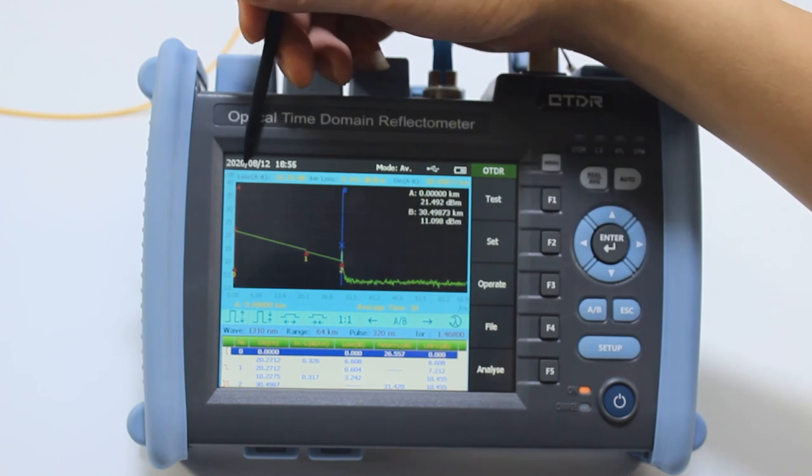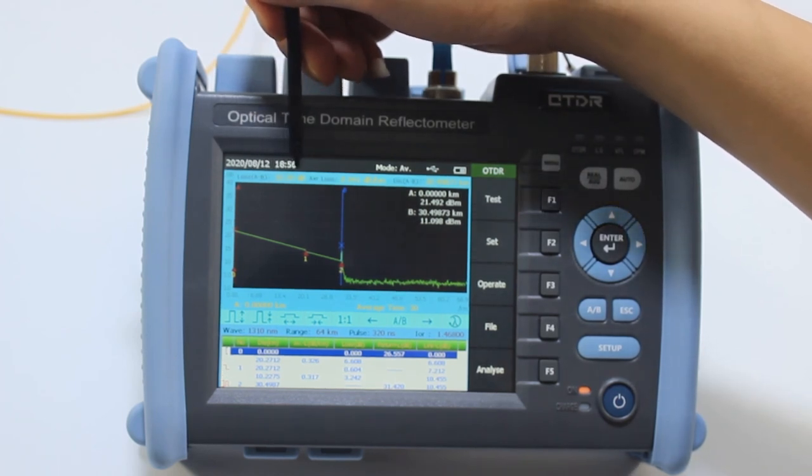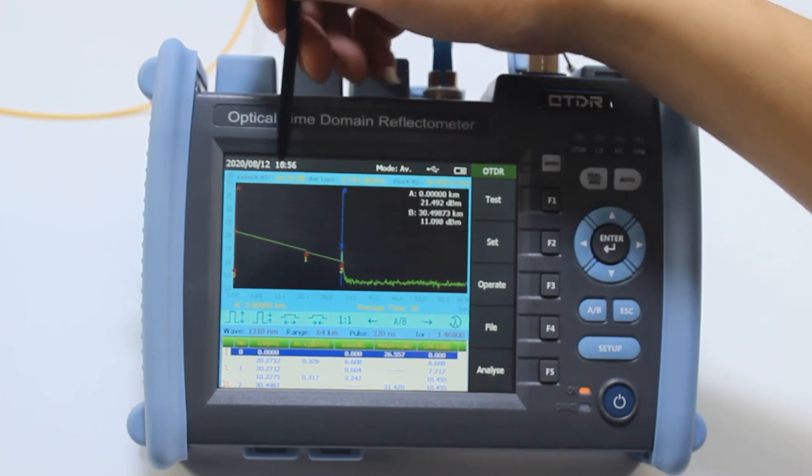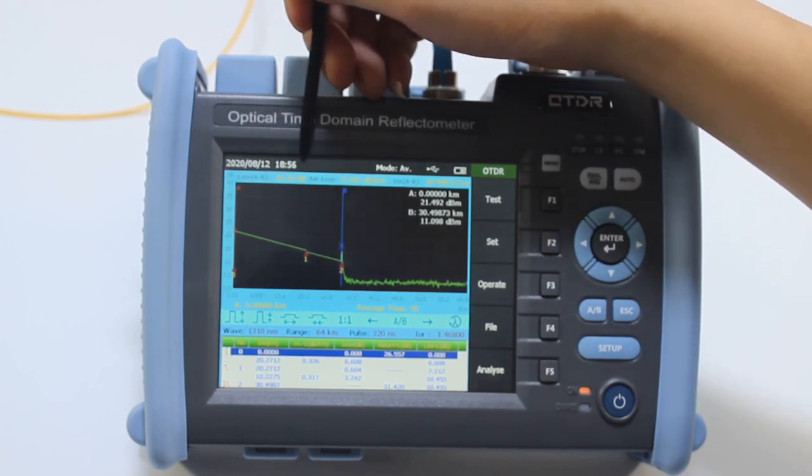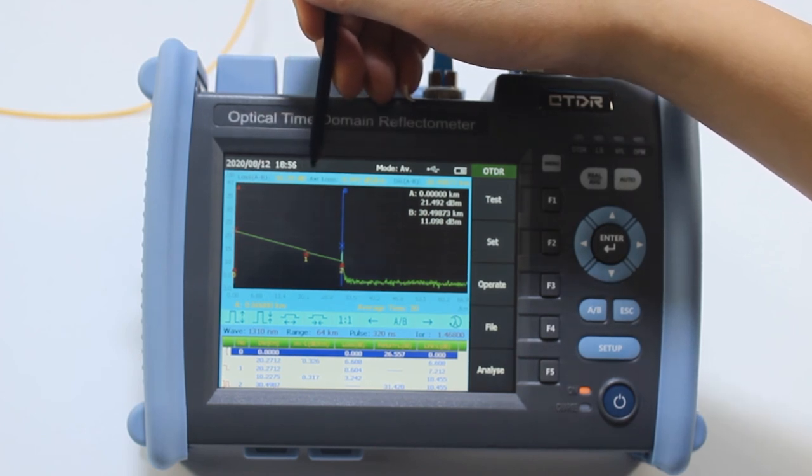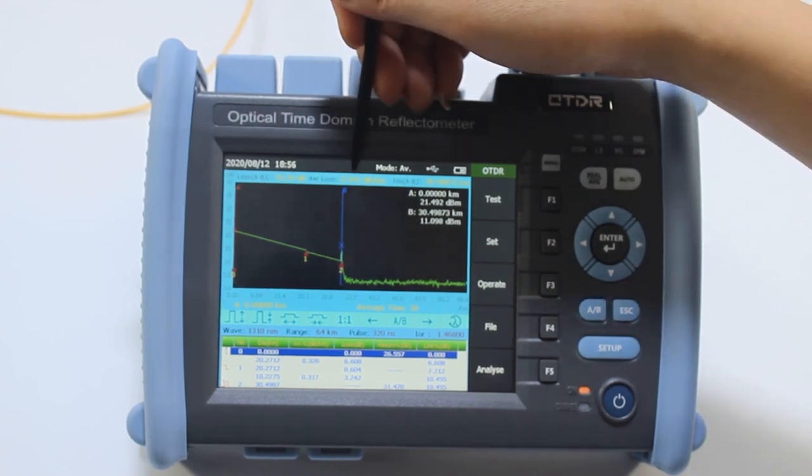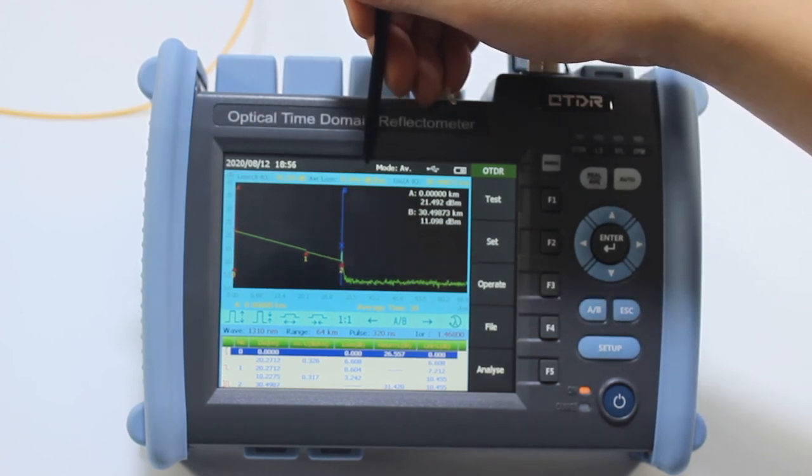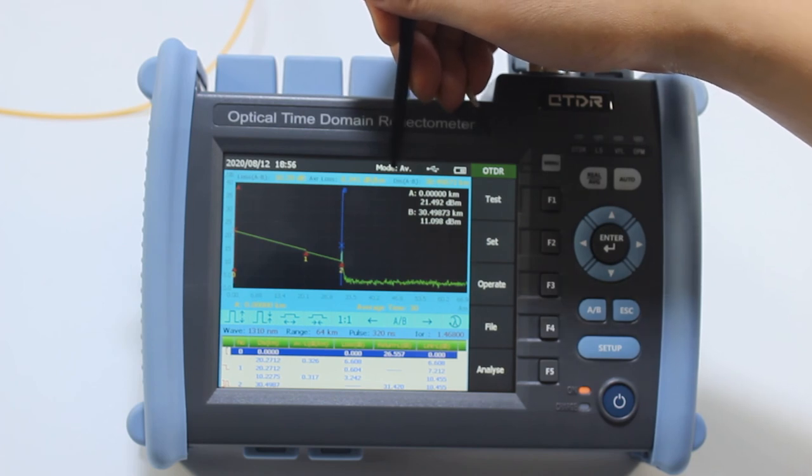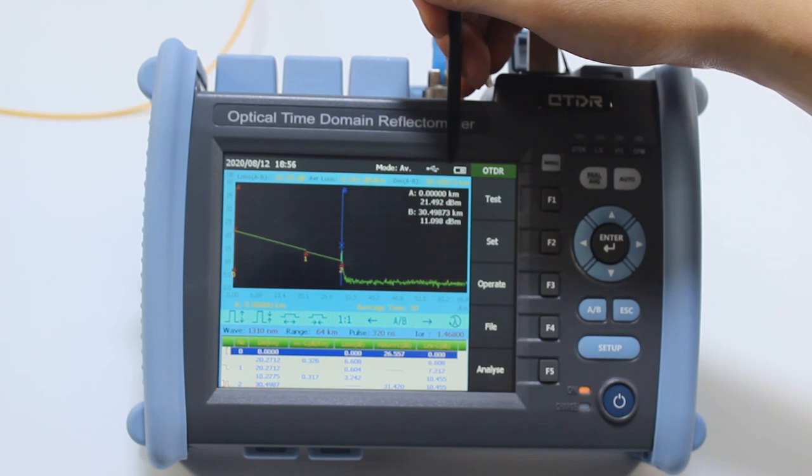For this line, it is the total link loss between cursor A and cursor B. The total loss is around 10 dB and the average loss between cursor A and cursor B is 0.341 dB per kilometer. And the total distance is about 30 kilometers.